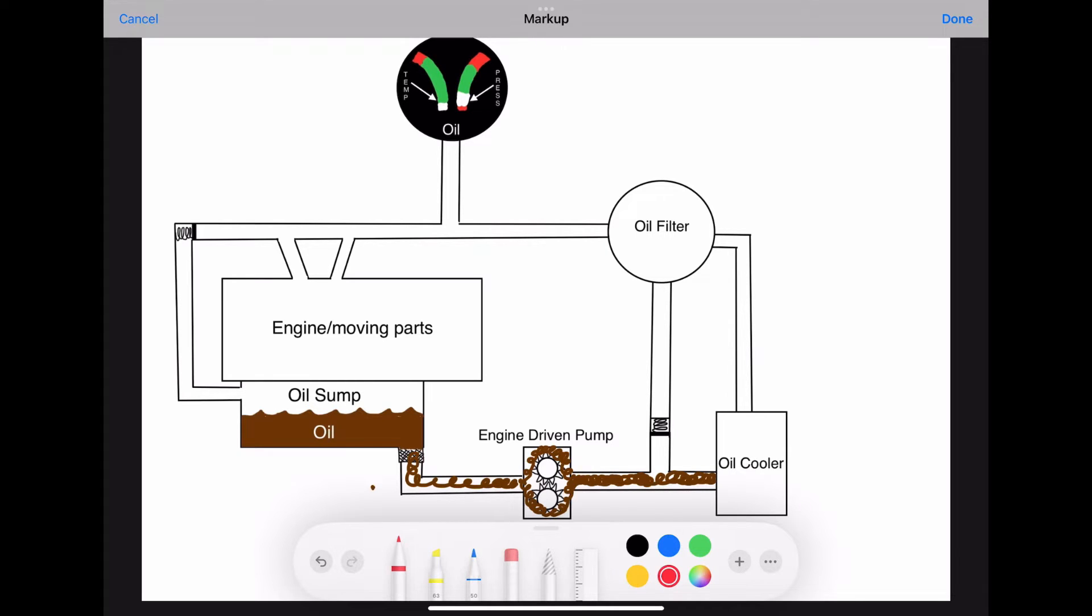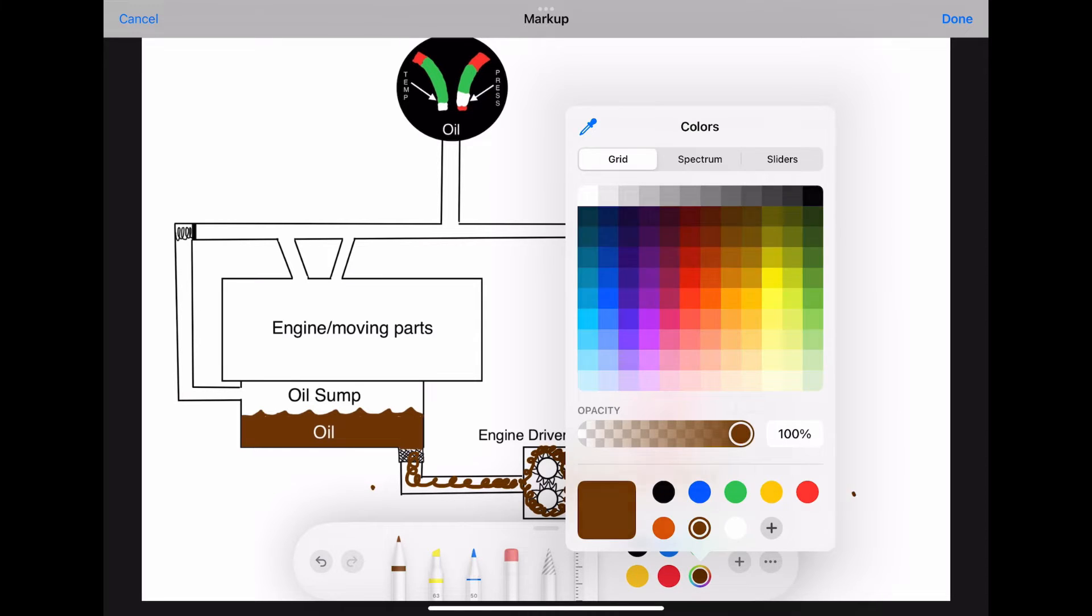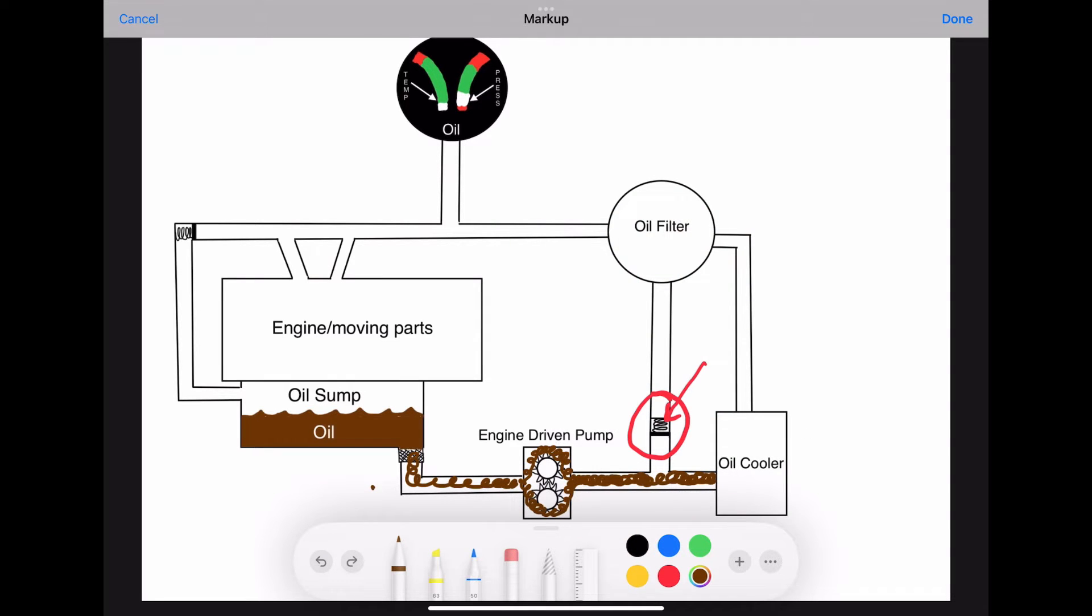before the oil reaches the oil cooler, it's redirected to a bypass valve. And usually, the bypass valve is controlled by a spring. And when pressure is applied to the valve, the spring compresses and allows the fluid, in this case the oil, to flow past the bypass valve. But how exactly does the oil know whether to flow through the cooler or whether to flow through the bypass valve?